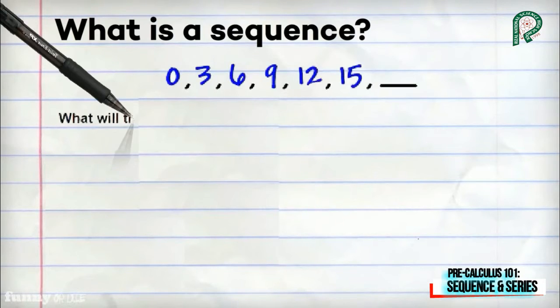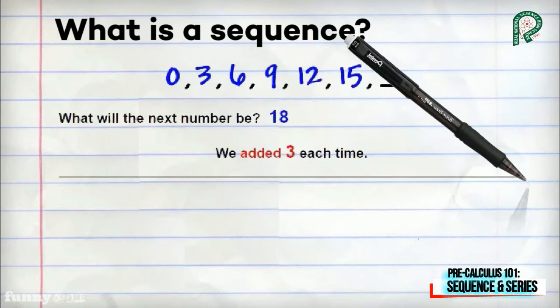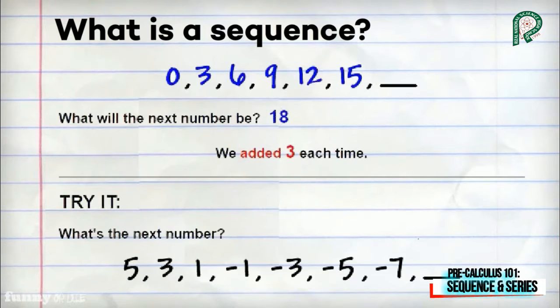You have 0, 3, 6, 9, 12, 15. What will be the next number? It's 18. Why? We just added 3 each time. 0 plus 3 equals 3, 3 plus 3 equals 6, and so on.